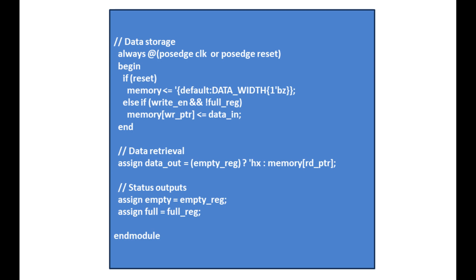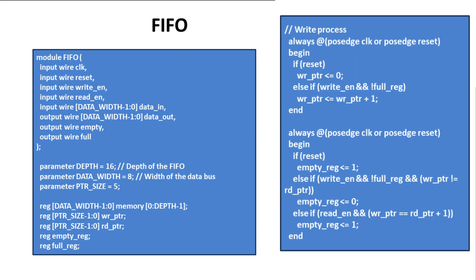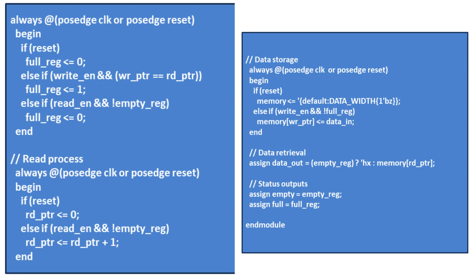This is how you can write a complete Verilog code of FIFO — first in first out. To revise: in the first part we did module declaration, input/output declaration, the parameters, registers, and signals. Then the write process, updating the empty register and full register state. Then the read process. And finally, how to store data in the memory register array, how to retrieve data from the FIFO, and the status output. It's a very simple code.